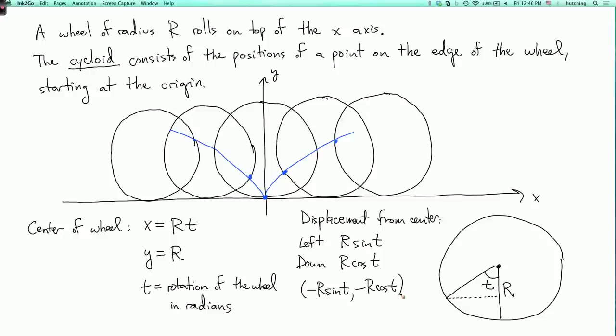So to get the actual position of the point that I want, I take the point rt, r, and I add this to it. So we get the parametric equations, x equals rt minus r sine t, and y equals r minus r cosine t.